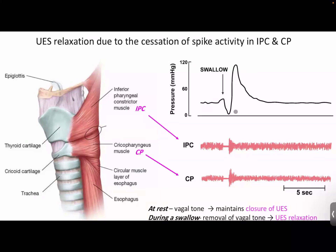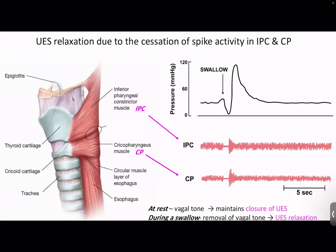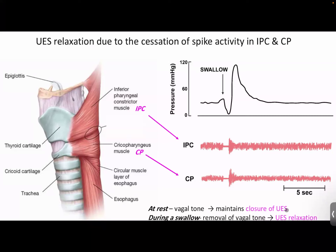After the tone decreases and the food passes through, the tone has to increase back up again — because we don't want food moving the opposite way back into the mouth. The tone increases even more than it initially was to prevent reflux. The upper esophageal sphincter is a skeletal muscle supplied by the vagus nerve. At rest, vagal tone maintains the closure of this sphincter.